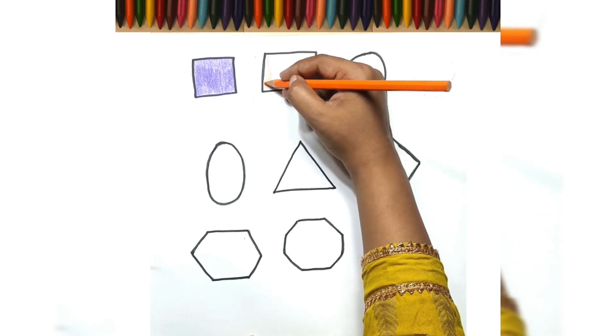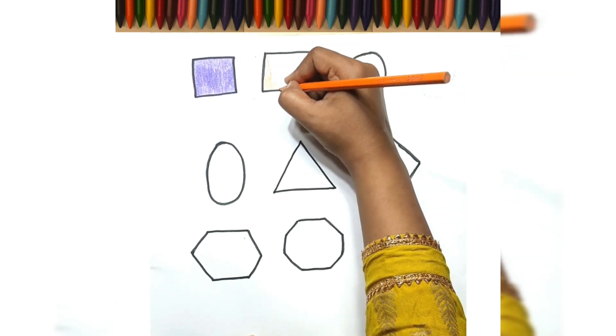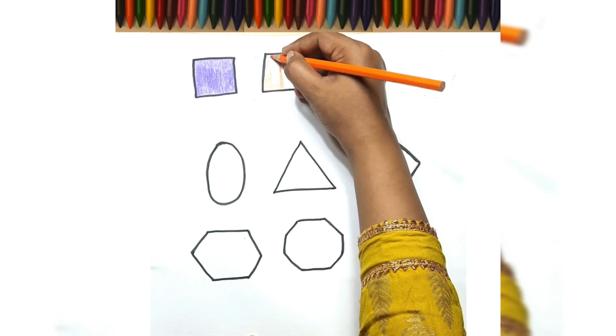Rectangle has four sides, four angles with two opposite equal sides.